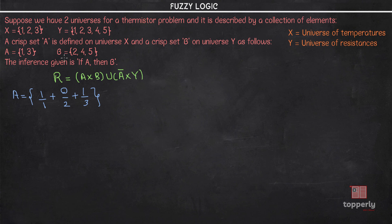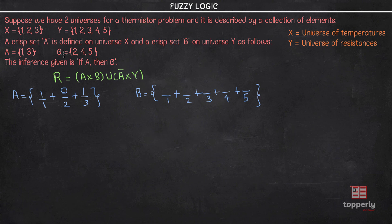Similarly for crisp set B, we list all elements of universe Y: 1, 2, 3, 4, and 5, distinguished with the plus operator. Since 2, 4, and 5 belong to set B, they have membership value 1, whereas 1 and 3, not present in set B, have membership value 0.